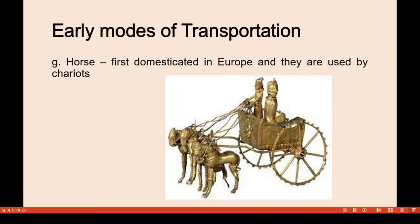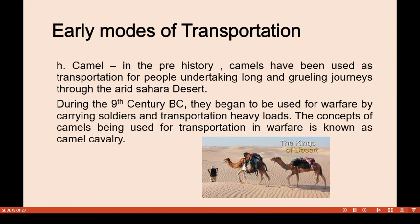The horse was domesticated in Europe and used to pull chariots, as illustrated by a prehistoric Egyptian king drawn by horses. The camel has been used as transportation for people undertaking long and grueling journeys through the arid Sahara Desert. During the 19th century BC, camels began to be used in warfare by carrying soldiers and heavy loads — this is known as camel cavalry. The camel is called the 'king of the desert' because it can store water, absorb heat, and endure the hotness of the sun.